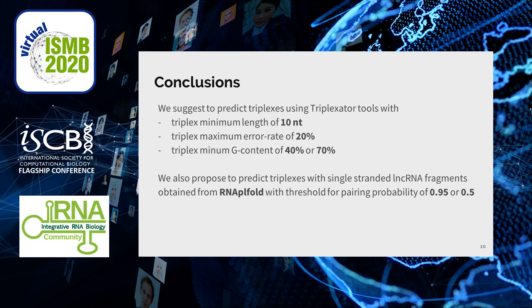In conclusion, we suggest predicting triplexes as follows: use 10 nucleotides for minimum triplex length, 20% for maximum error rate, and try both 40% and 70% for minimum G content. You should not disregard repeats and low-complexity regions, as ignoring them — the default Triplexator setting — impairs prediction quality. We also suggest predicting triplexes not only for the entire lncRNA, but also for single-stranded fragments predicted by RNAfold with pairing probability thresholds of 0.5 or 0.95.